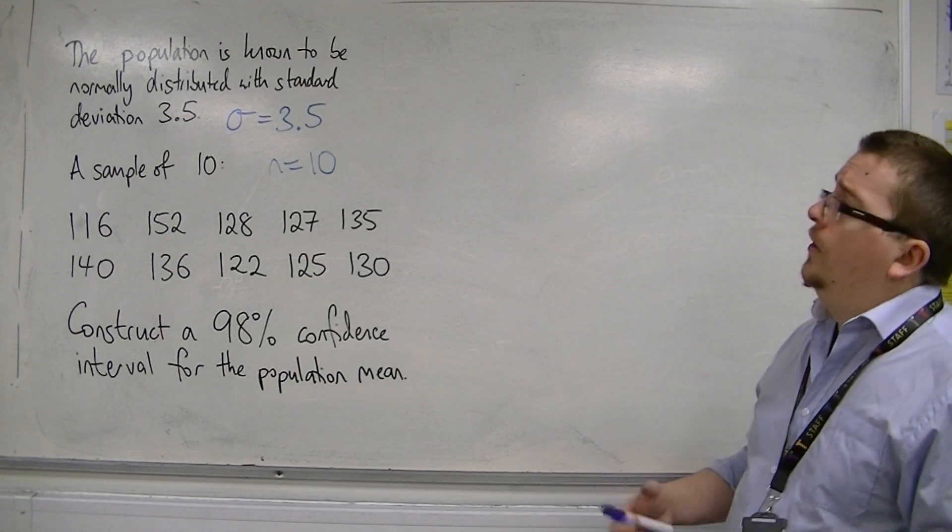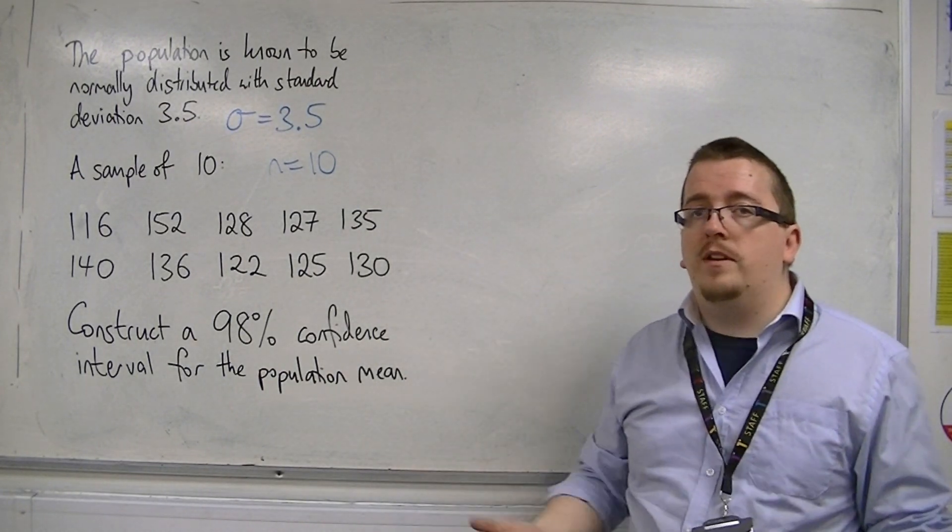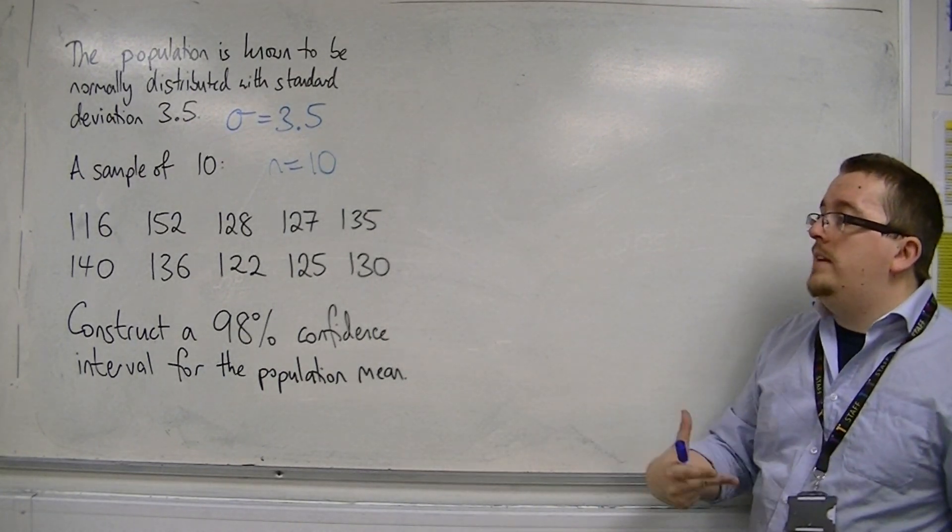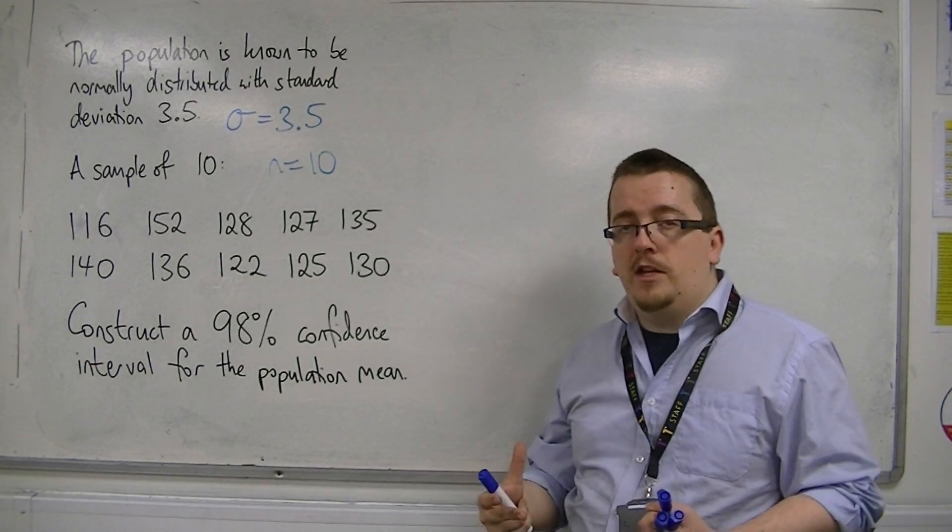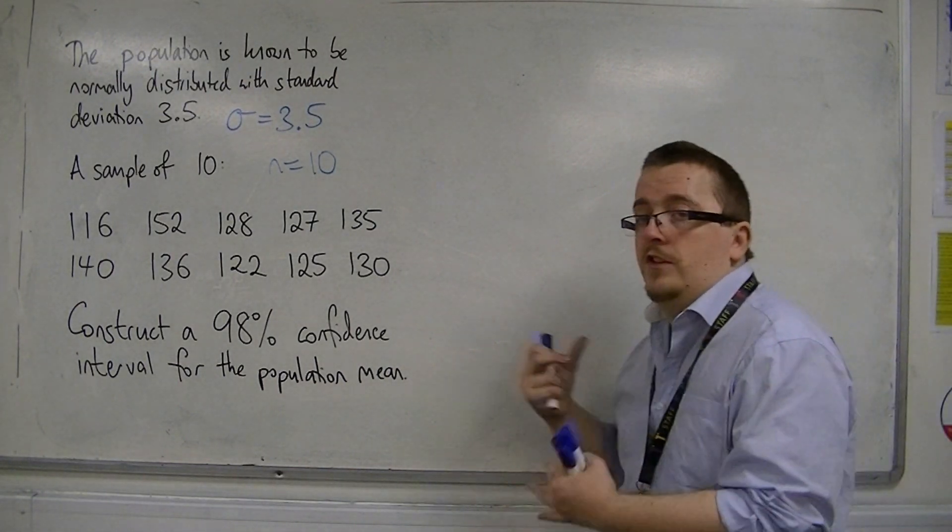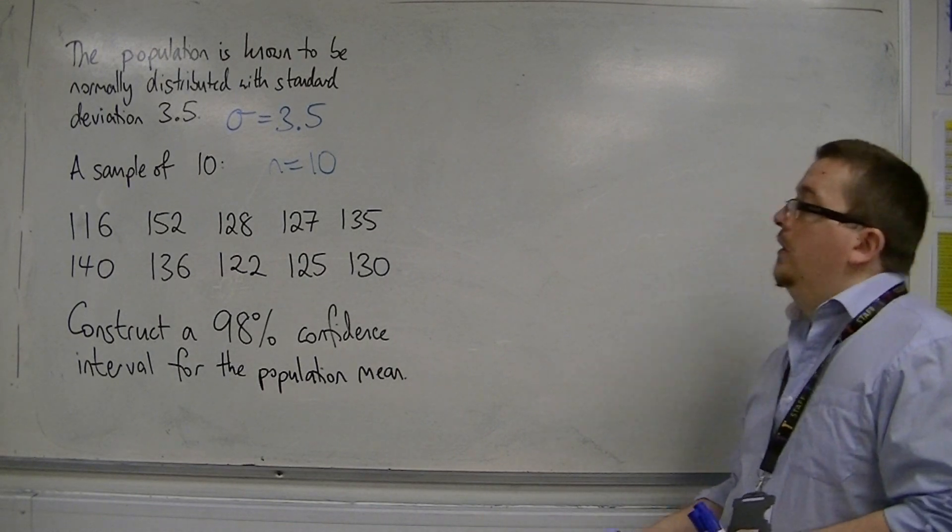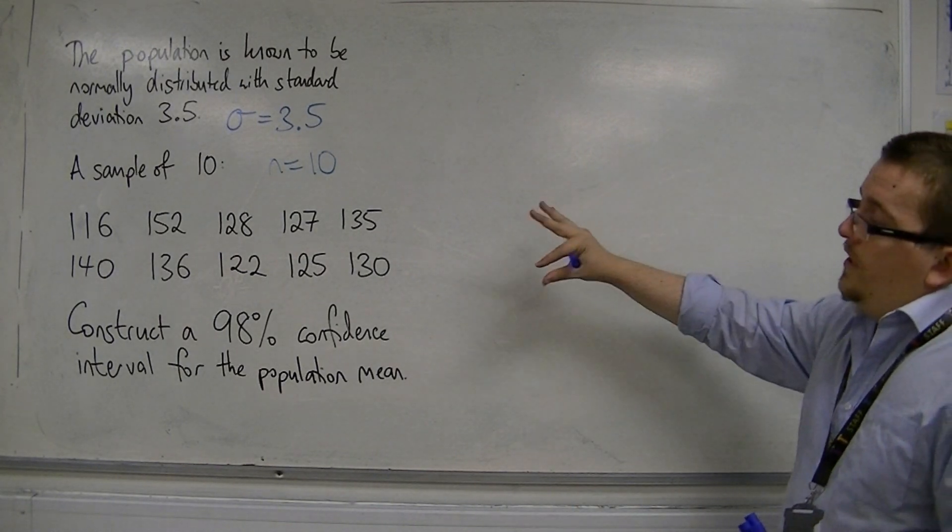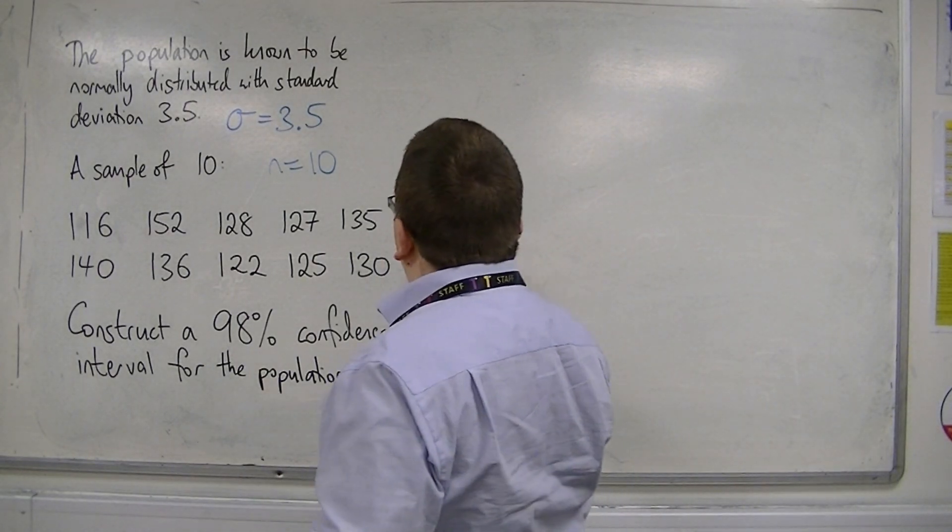Now, because we know that the population was normally distributed, that would mean that the sample will also be normally distributed. And that was coming from when we were looking at the central limit theorem. So, what we're going to do first is we're going to have to calculate a mean, a sample mean.